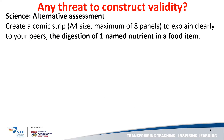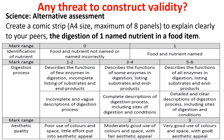Let's take a look at this science alternative assessment. Sec 2 students are asked to create a comic strip on an A4 size paper, using a maximum of eight panels to explain clearly the digestion of a named nutrient in a food item. Here is the accompanying rubric. I'd like you to notice the criteria in this science alternative assessment and identify whether there's any issue with construct validity.